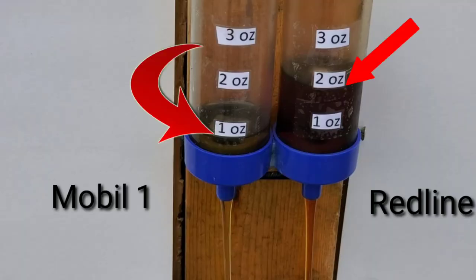Mobile One starts off by winning the cold pour test by one ounce. Can Redline make a comeback?